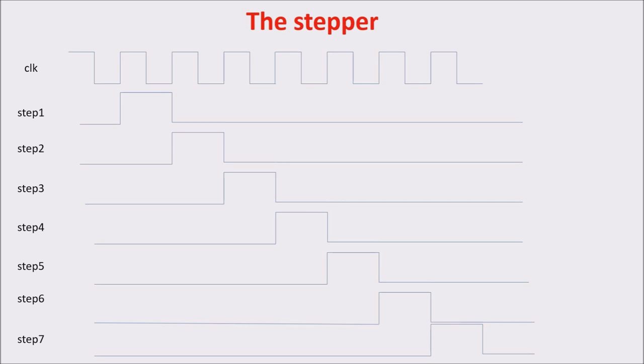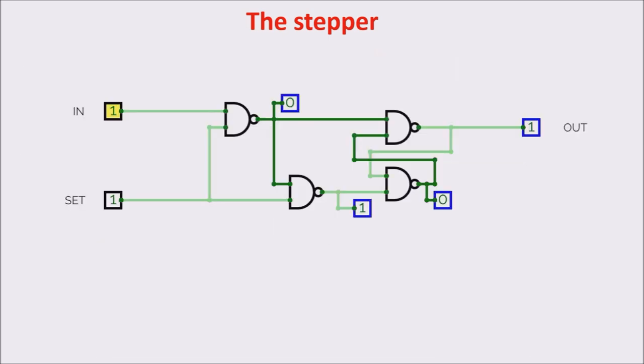We can build a stepper using our memory cell. In particular, we can use the NAND data latch we saw in previous videos. We see here, when set is 1, the input goes to the output and we acquire the data. If set is 0, the output stays unchanged, even if we change the input, so we store the data. We can consider this circuit like a memory cell, and we can represent it in this way.